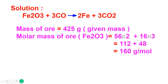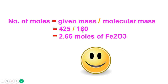The mass of ore given is 425 grams. The molar mass of Fe₂O₃: iron is 56 g/mol × 2 = 112, and oxygen is 16 g/mol × 3 = 48. Adding these gives 160 g/mol. So the molar mass of Fe₂O₃ is 160 g/mol.